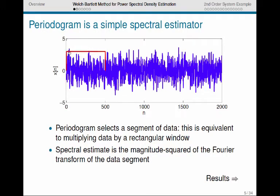We can think of the periodogram as selecting the segment of data by multiplying the data by a rectangular window, hence the red rectangle here. And then we just take the FFT of that data segment and look at the magnitude squared of it.